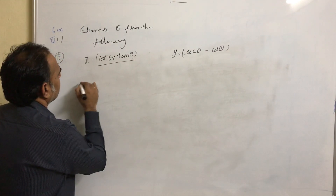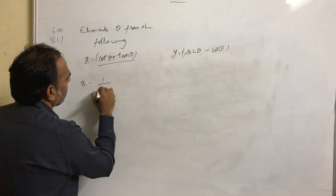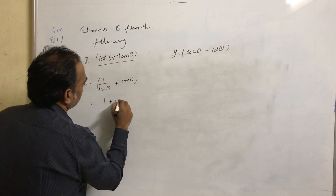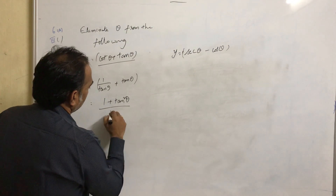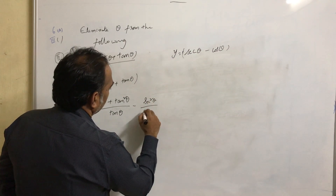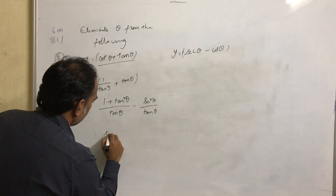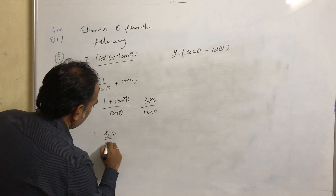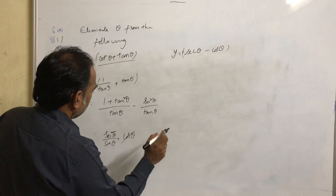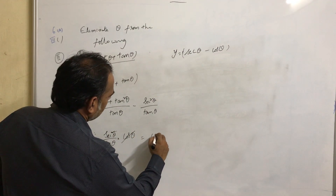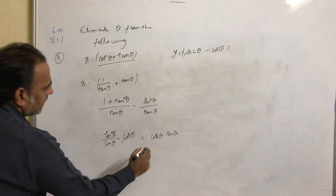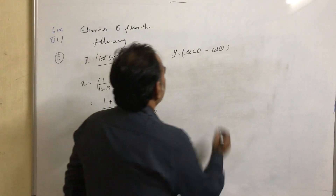First, I will simplify x. x equal to 1 by tan theta plus tan theta. That is equal to 1 plus tan squared theta by tan theta. What is 1 plus tan squared theta? That is equal to secant squared theta by tan theta. This can be written as secant squared theta by sin theta into cos theta. This cos theta and this secant theta get cancelled. So this can be written as cosecant theta into secant theta.